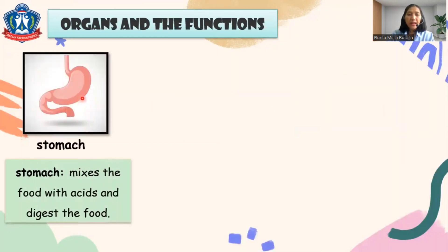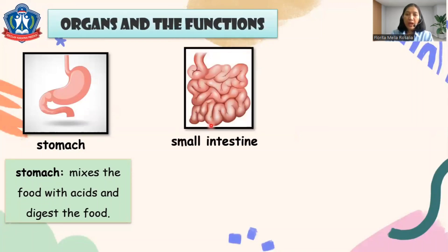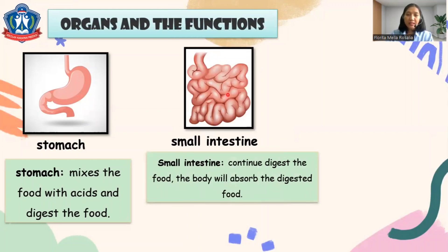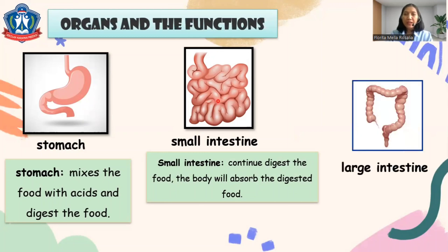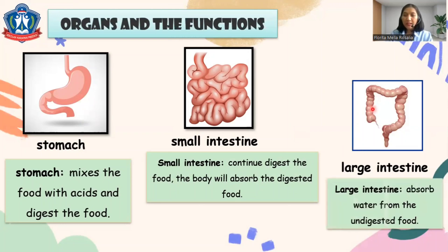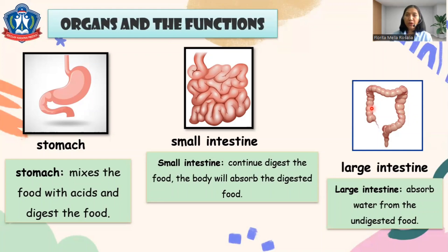The stomach is where the food we eat is mixed with acid and digested. The small intestine continues to digest the food, and then the body absorbs the digested food. The large intestine absorbs the water from the undigested food.